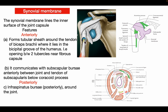Anteriorly, the synovial membrane also communicates with the subscapular bursa between the shoulder joint and the tendon of subscapularis, below the coracoid process. In the posterior aspect, it communicates with the infraspinatus bursa between the shoulder joint and the infraspinatus muscle. In the diagram we can see the subscapular bursa anteriorly, the infraspinatus bursa posteriorly, and the synovial sheath covering the tendon of biceps brachii.